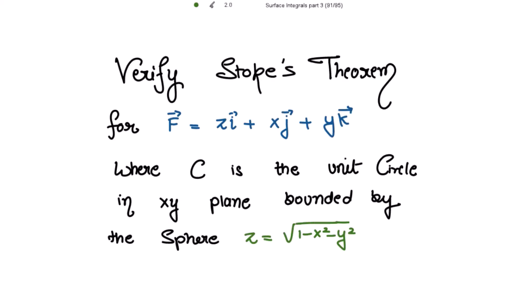To verify the Stokes theorem for this function where C is a unit circle in the xy plane, we need to show that the value of the line integral of the dot product of F vector with dr vector is equal to the surface integral of curl of F vector dot product with n vector ds. If the value of the left hand side equals the value on the right hand side, then we say that the Stokes theorem is verified.